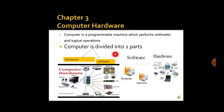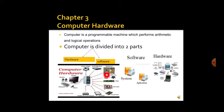For the working of a computer we mainly require hardware devices and software devices. Hardware includes monitor, mouse, keyboard, speakers, CPU, VGA card, hard disk, DVD-ROM drive, and power supply. Software is required for the working of the computer, while hardware devices control the working of the computer.